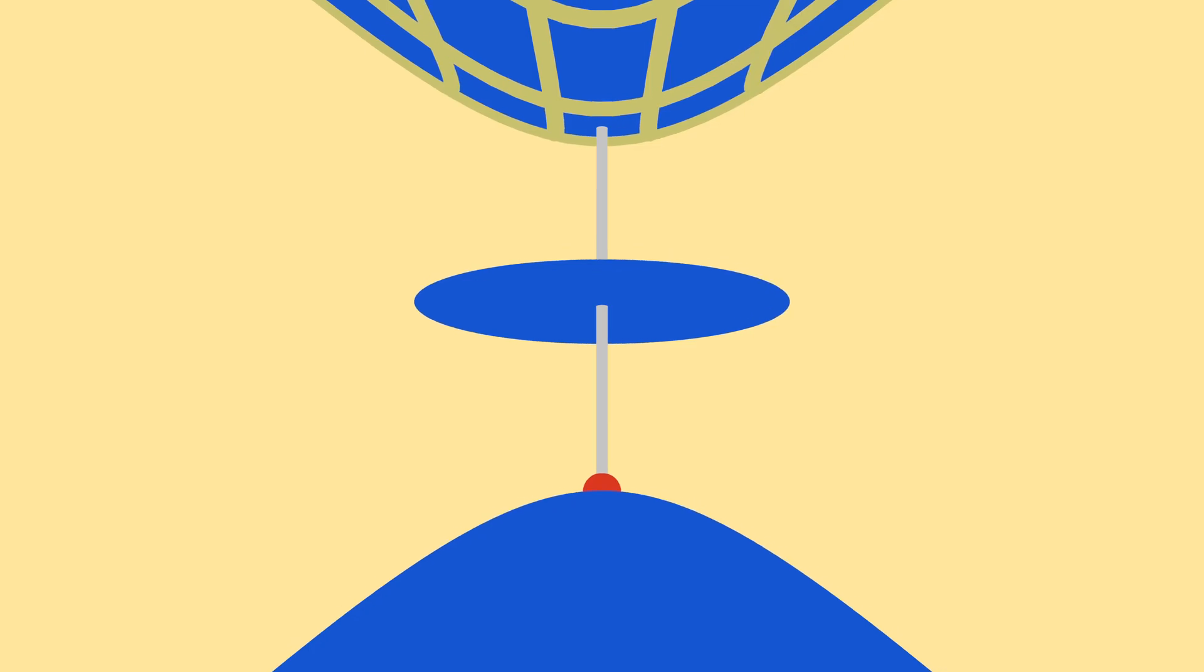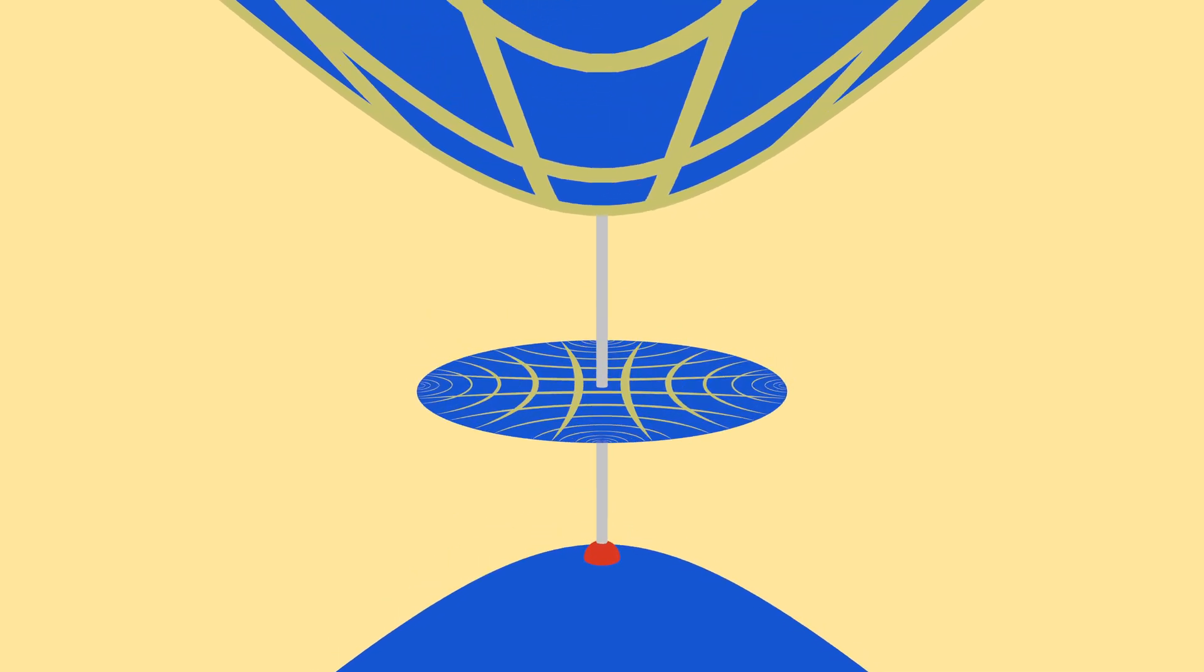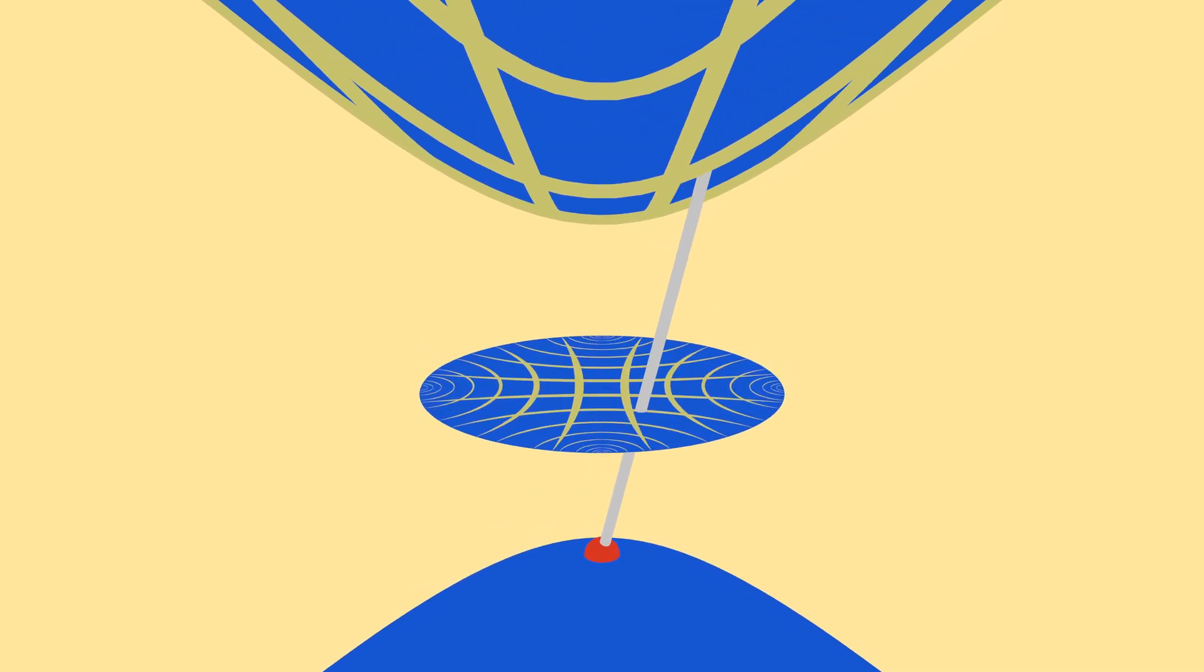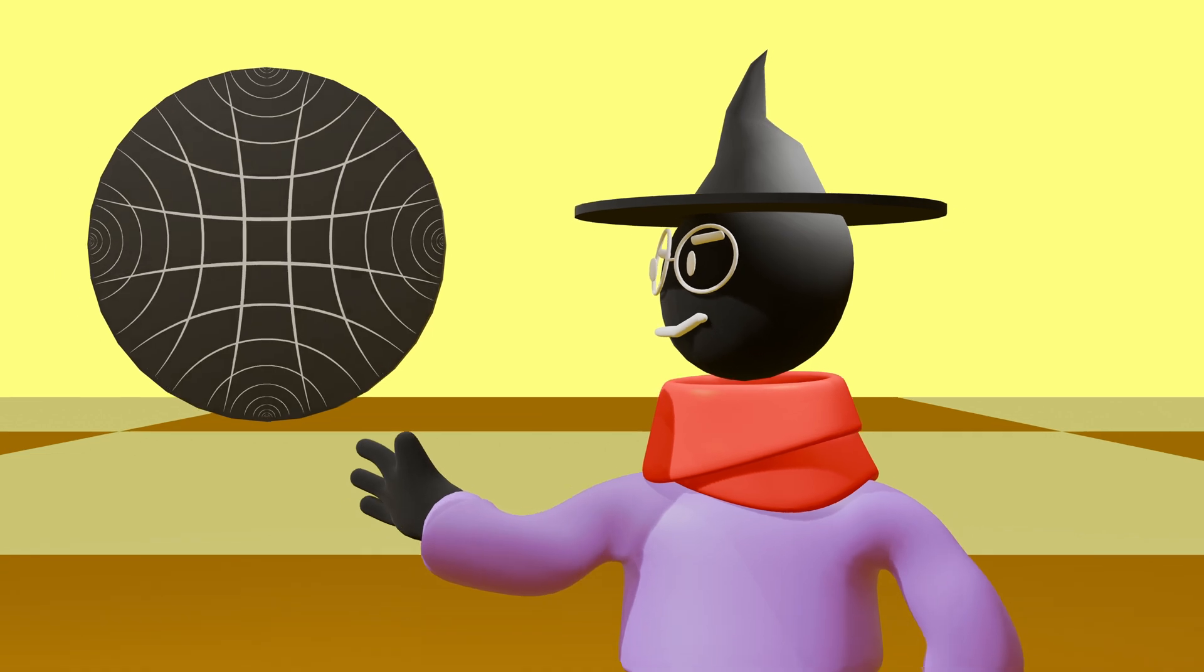To project this hyperboloid, simply take a line from each point to the top of its bottom sheet. The intersection of this line with the xy plane creates a disk, effectively confining the infinite hyperboloid into a unit disk. Because the timelike direction was flattened out, this projection can be perfectly represented in plain old euclidean space.